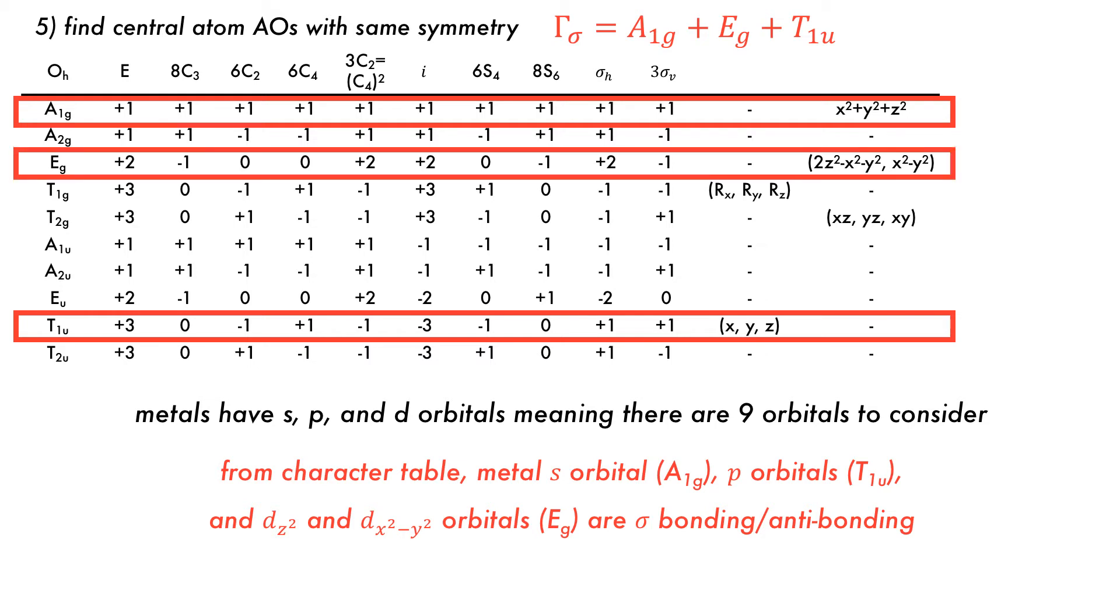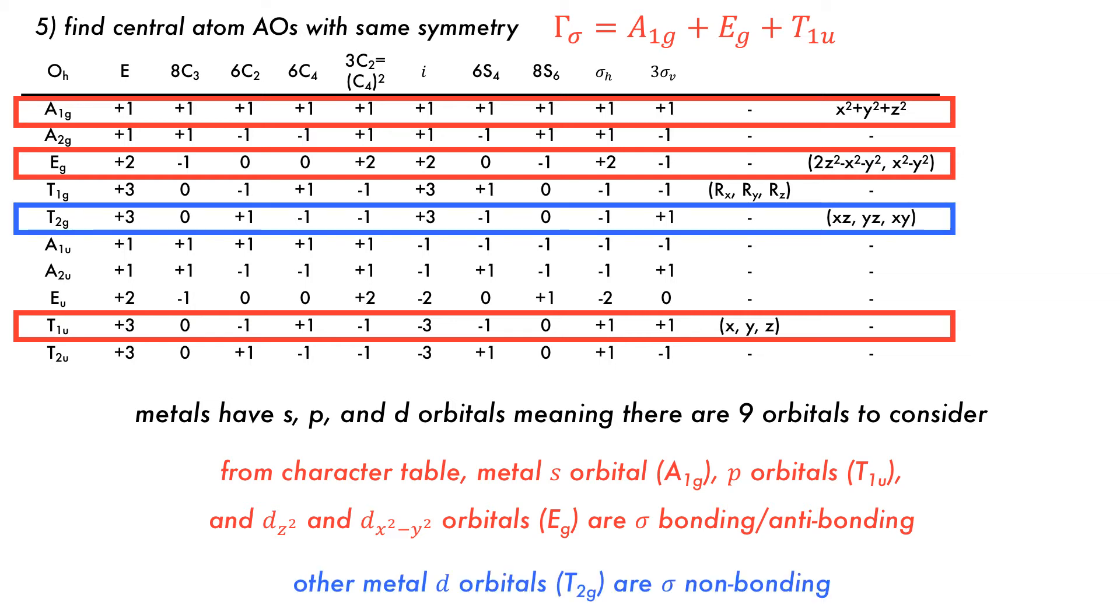The eg set has the symmetry of the dz-squared and x-squared minus y-squared orbitals, which form a symmetry matched pair with the two eg group orbitals. This takes care of the sp and two of the d orbitals. The remaining d orbitals, which have a symmetry of t2g, have no symmetry matched pair among the irreducible representations of group orbitals in this example, meaning they will be non-bonding without any sigma interactions.